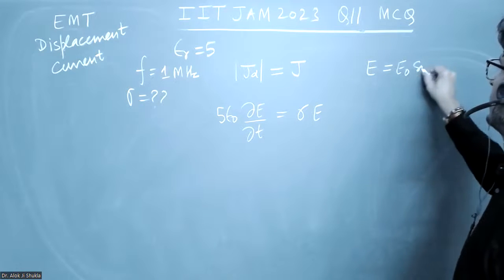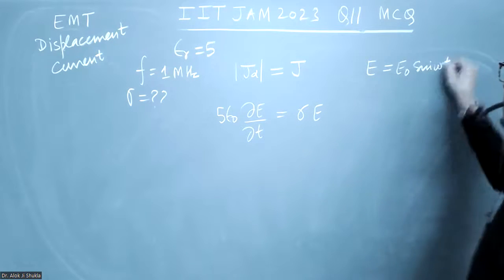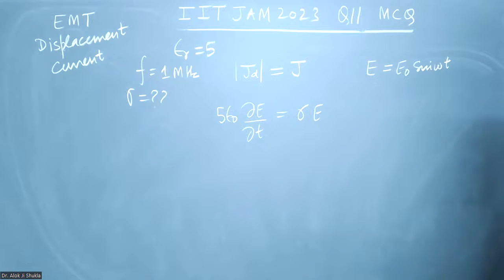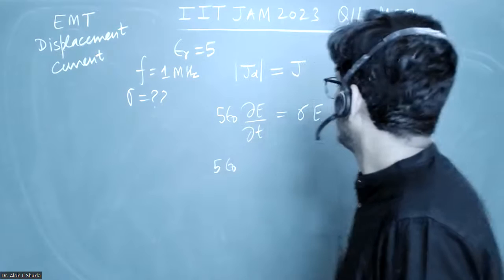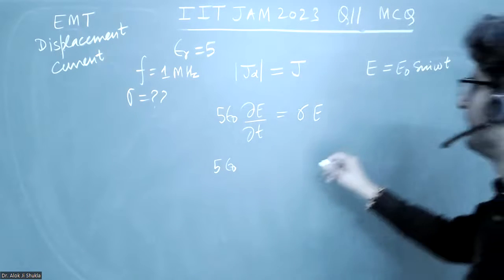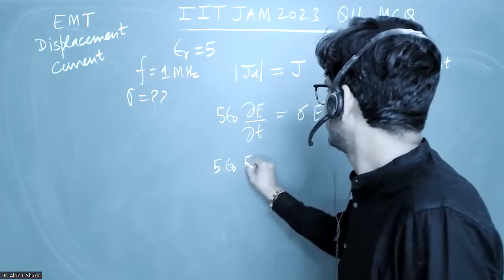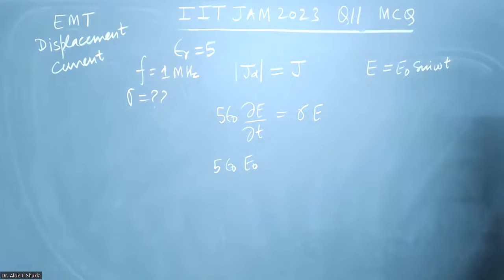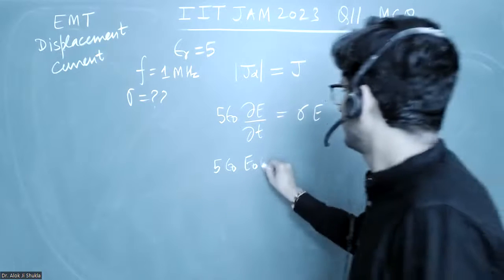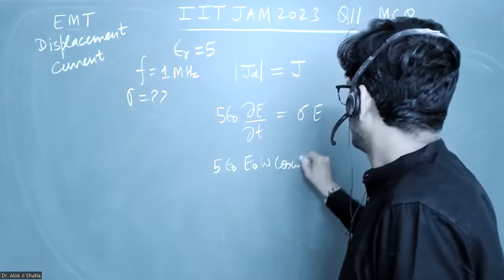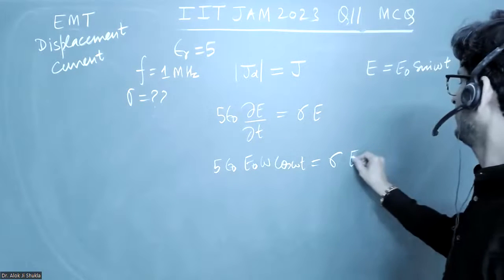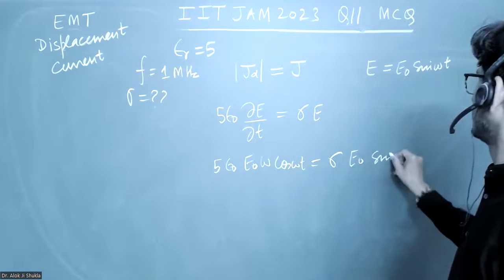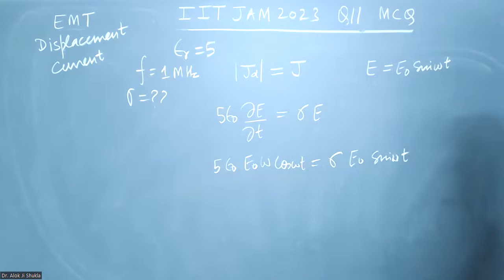E₀ sin(ωt), let us take this. This will become 5ε₀ dE/dt, which becomes E₀ω cos(ωt), equal to σE₀ sin(ωt).